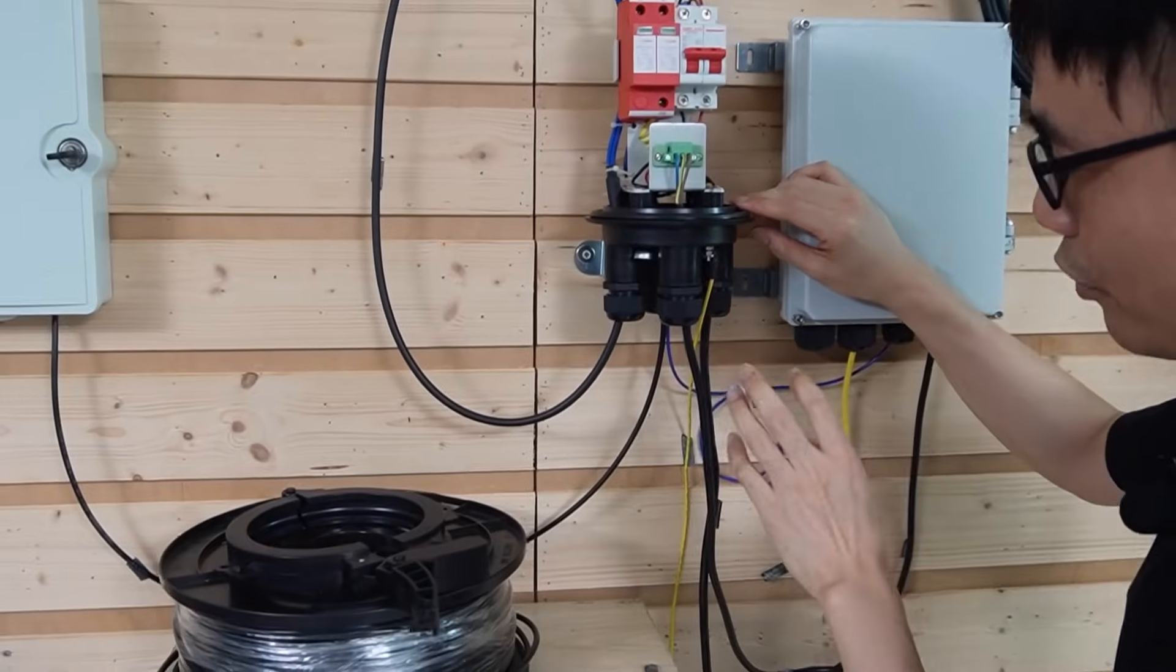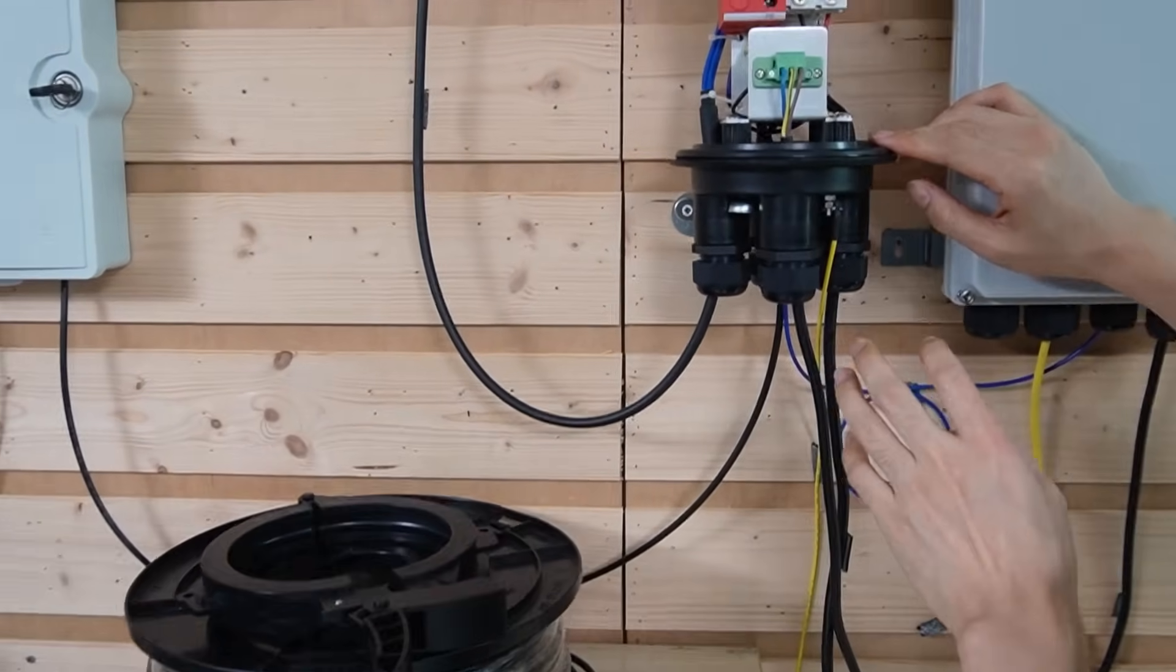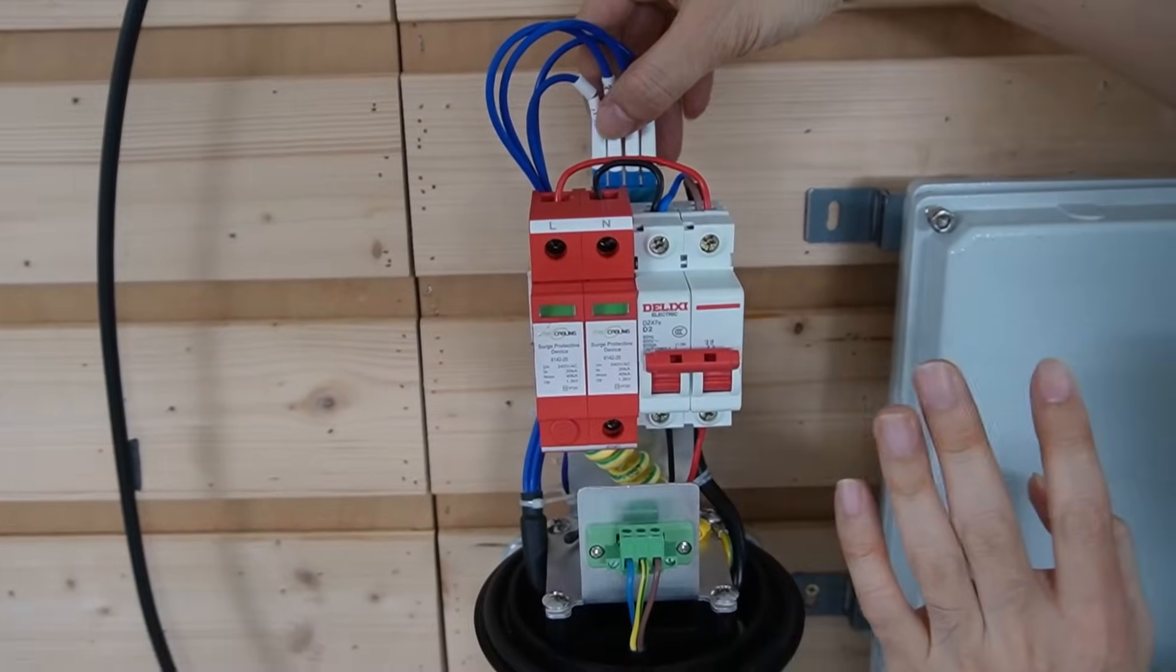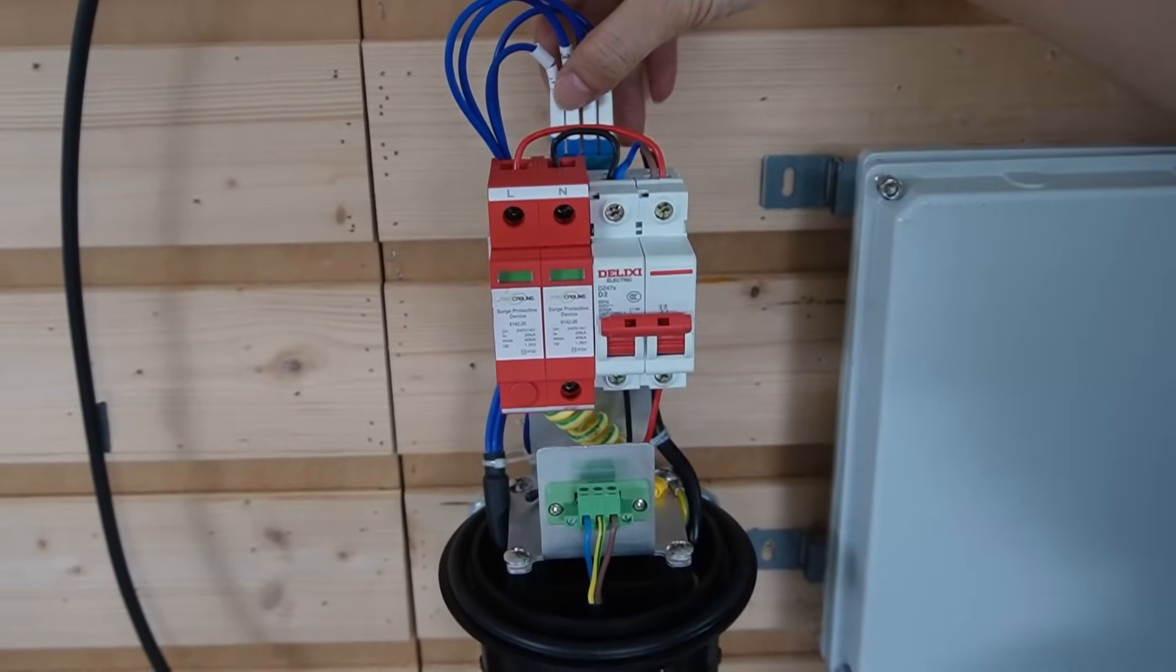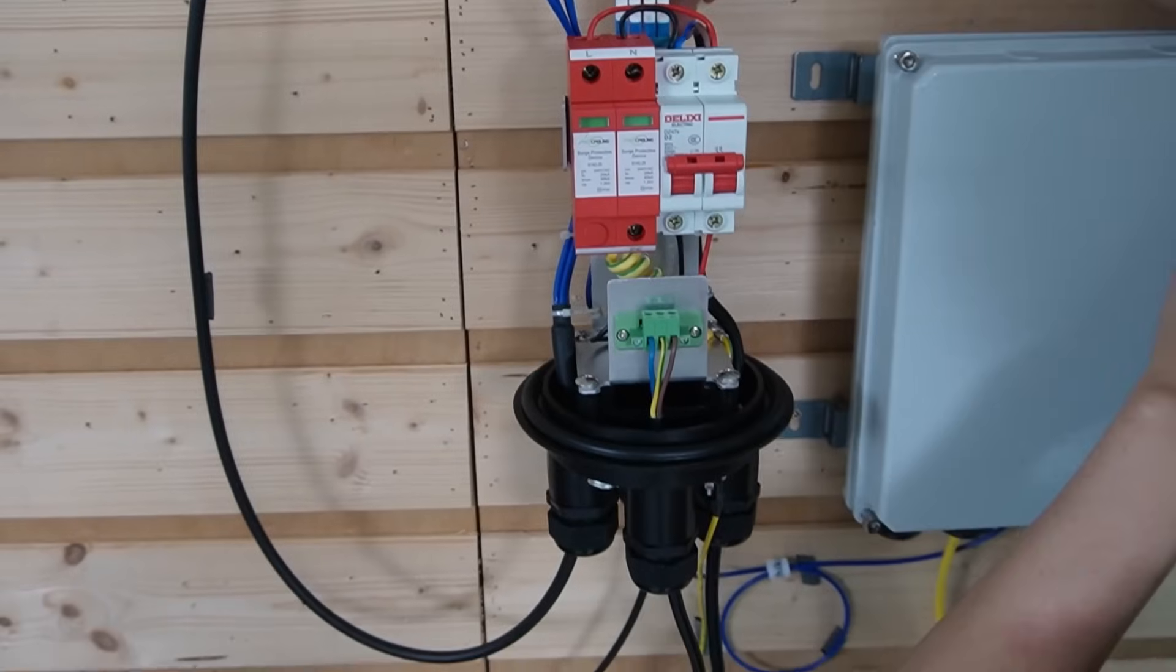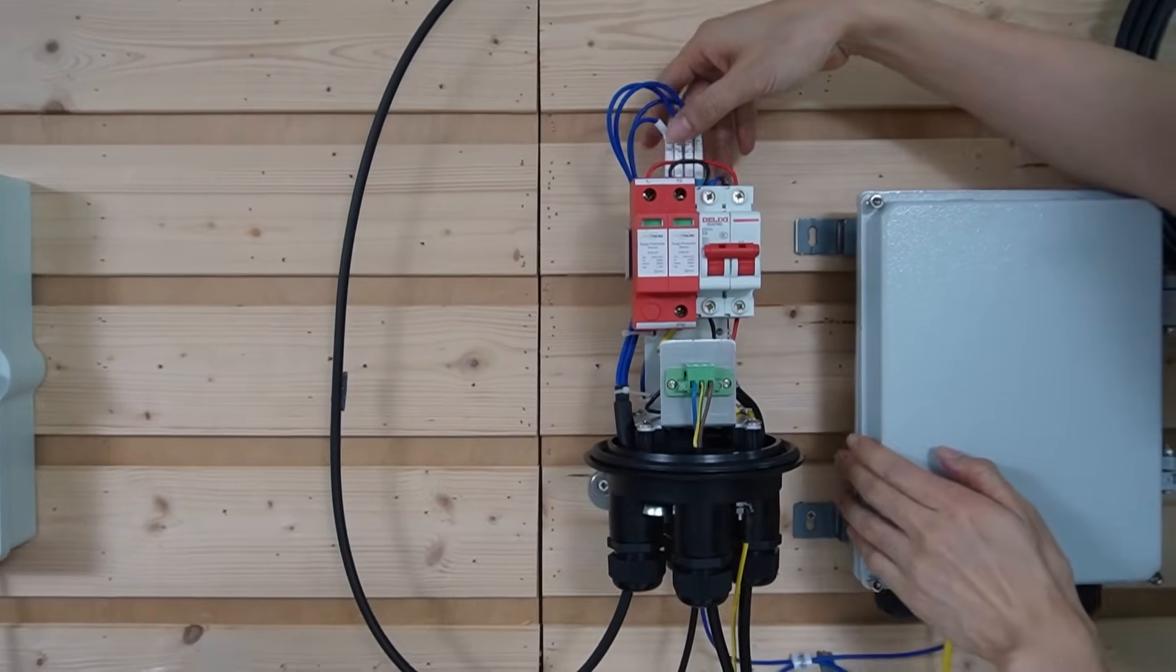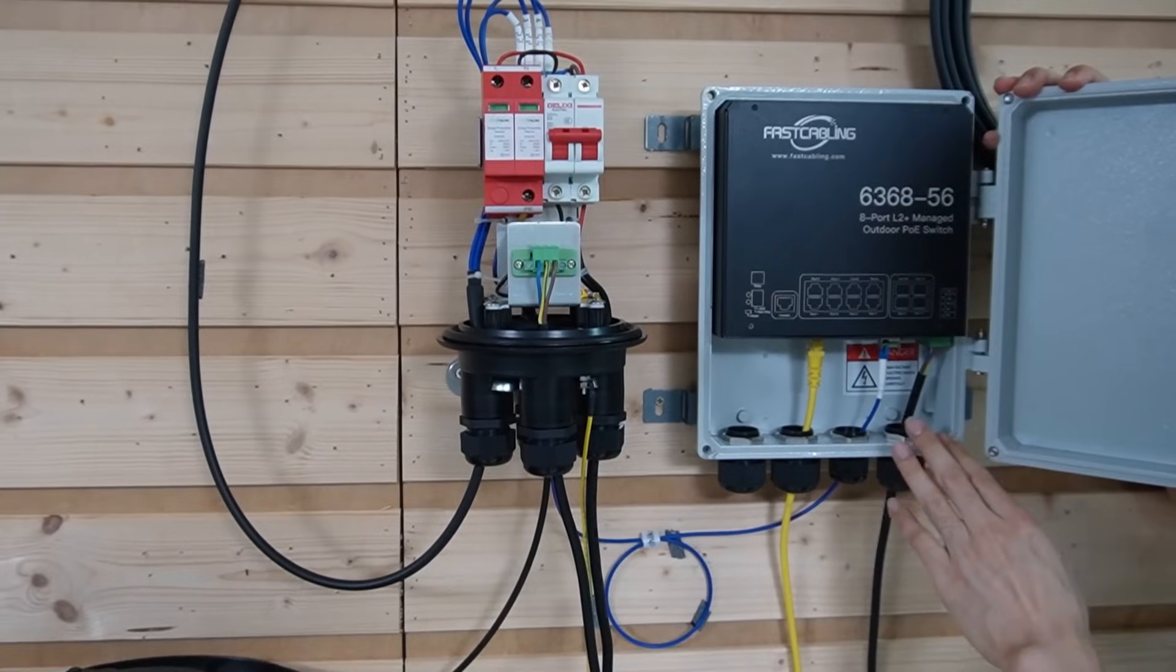The fiber optic strands coming from the control room are connected to the coupler on the top. We have three fiber optic strands going to the cable that continues to the next location. We take one strand from this fiber optic cable and connect it to our outdoor PoE switch.